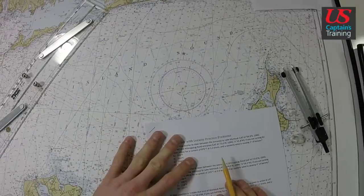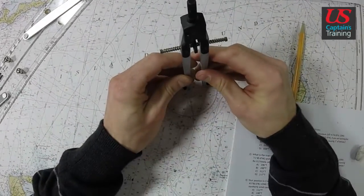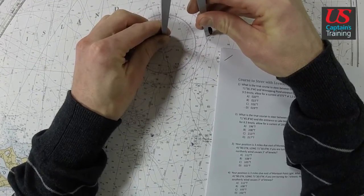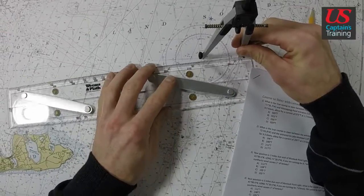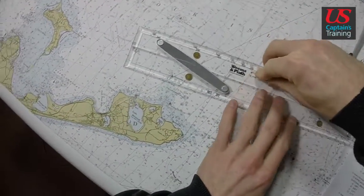75 degrees true. We're going to pull this off of our compass. I always like to use these dividers. Okay, there's 75. Bump the parallel rules up. Now we have 75 degrees true on our parallel rules.